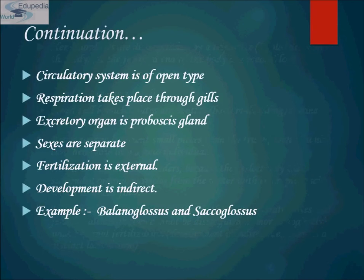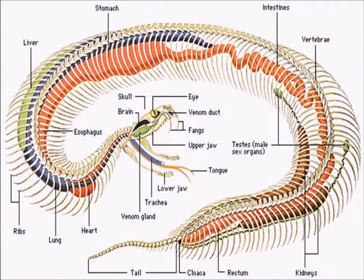The circulatory system is of open type. Respiration takes place through gills. The excretory organ is the proboscis gland. Sexes are separate, fertilization is external, and development is indirect. Examples of hemichordata include Balanoglossus and Psychoglossus.